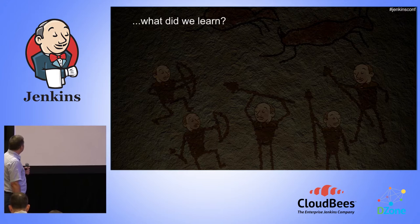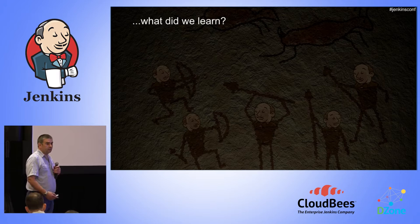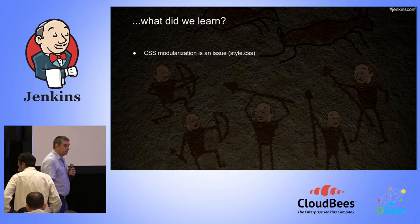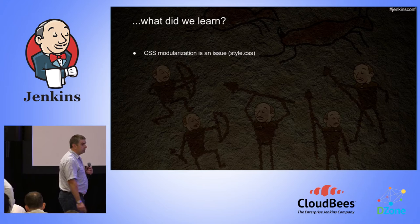So basically, what did we learn? There are a few key areas where improvements to the Jenkins UI can lead to major improvements in user experience. One of the first things we're going to talk about is CSS and how the lack of modularization of CSS is a problem right now. There is no real modularization, and we think if we can fix that, we can make some major improvements to the UI and add some pretty cool new features.